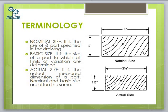The first terminology is nominal size, which is simply the size of a part specified in the drawing or used for general identification. Basic size is the size to which all limits of variation — called tolerances — are applied; it is the theoretical or ideal dimension. Actual size is the actual measured dimension of the part. The difference between the basic size and the actual size should not exceed a certain limit, otherwise it will interfere with the interchangeability or mating of two parts.